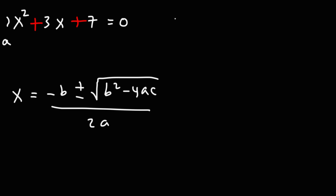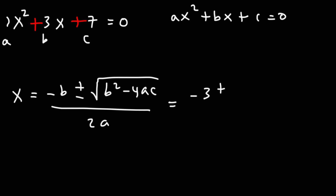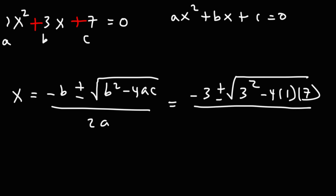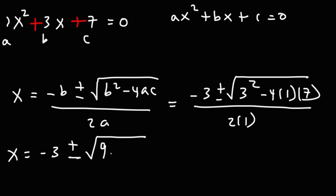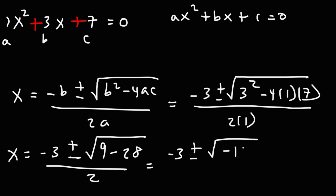This quadratic equation is in the form ax squared plus bx plus c equals 0. So that means a is 1, b is 3, and c is 7. Using this formula, it's going to be negative 3 plus or minus the square root of b squared — which is 3 squared — minus 4ac, or 4 times 1 times 7, divided by 2a, or 2 times 1. Now we'll simplify this expression: 3 squared is 9, and 4 times 7 is 28. So 9 minus 28 is negative 19.